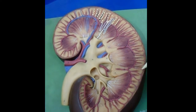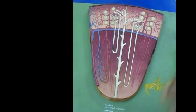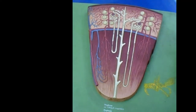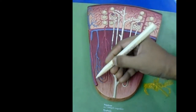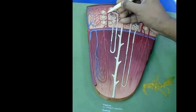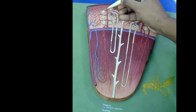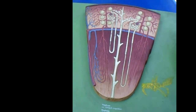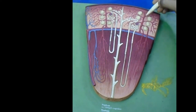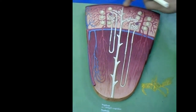For a clearer view, we cut a segment of the lobe. In this cut section of one lobe of the kidney, we can identify: the interlobar artery, the arcuate artery, and the interlobular artery. The lobule of the kidney is that portion of the cortical arch bounded on each side by two interlobular arteries.